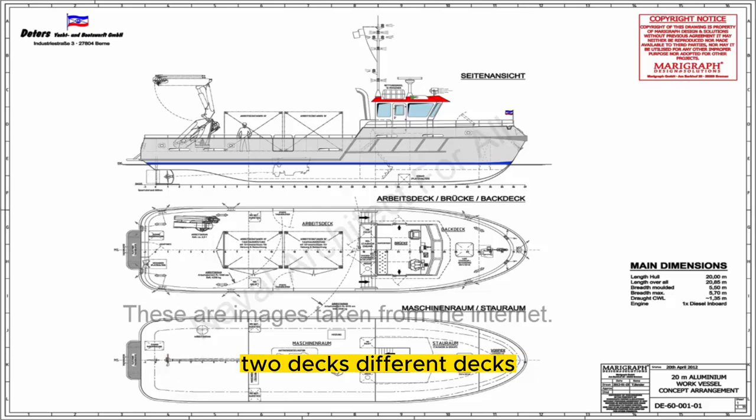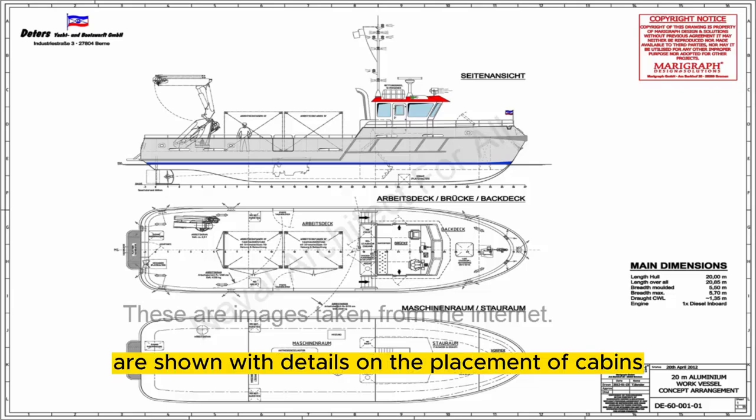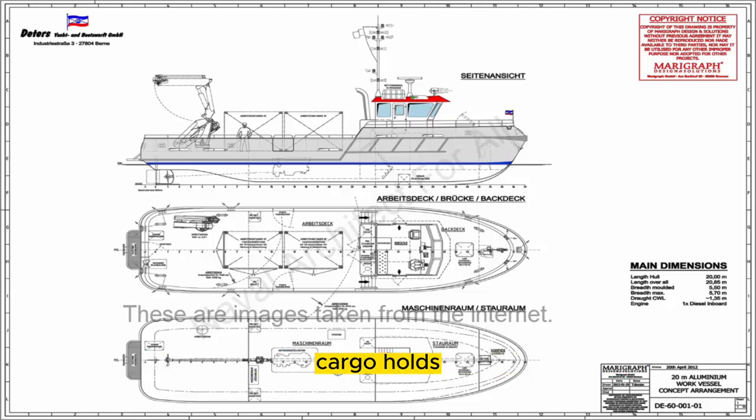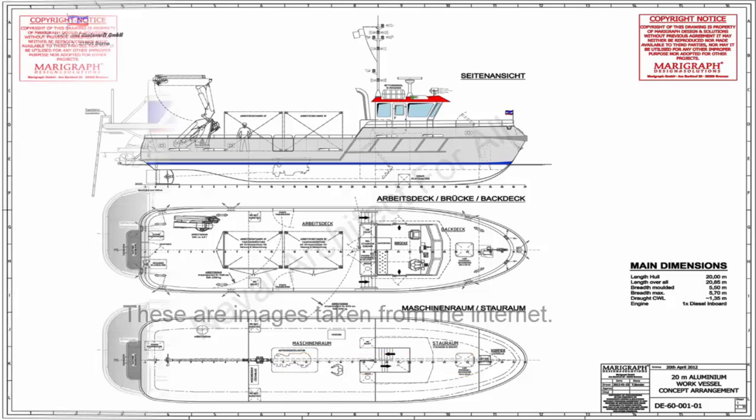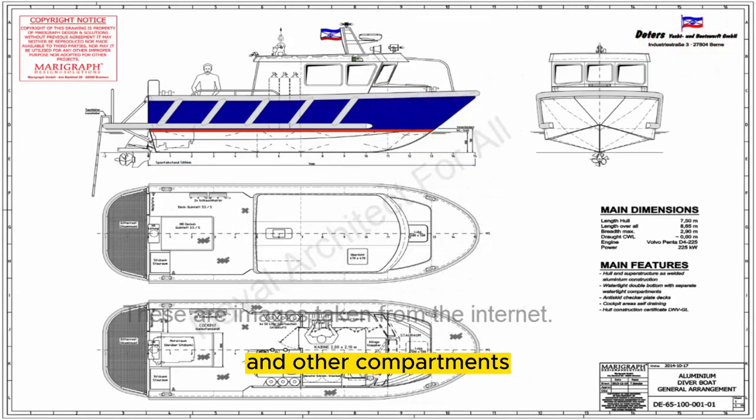2. Decks: Different decks are shown with details on the placement of cabins, cargo holds, machinery spaces, and other compartments.